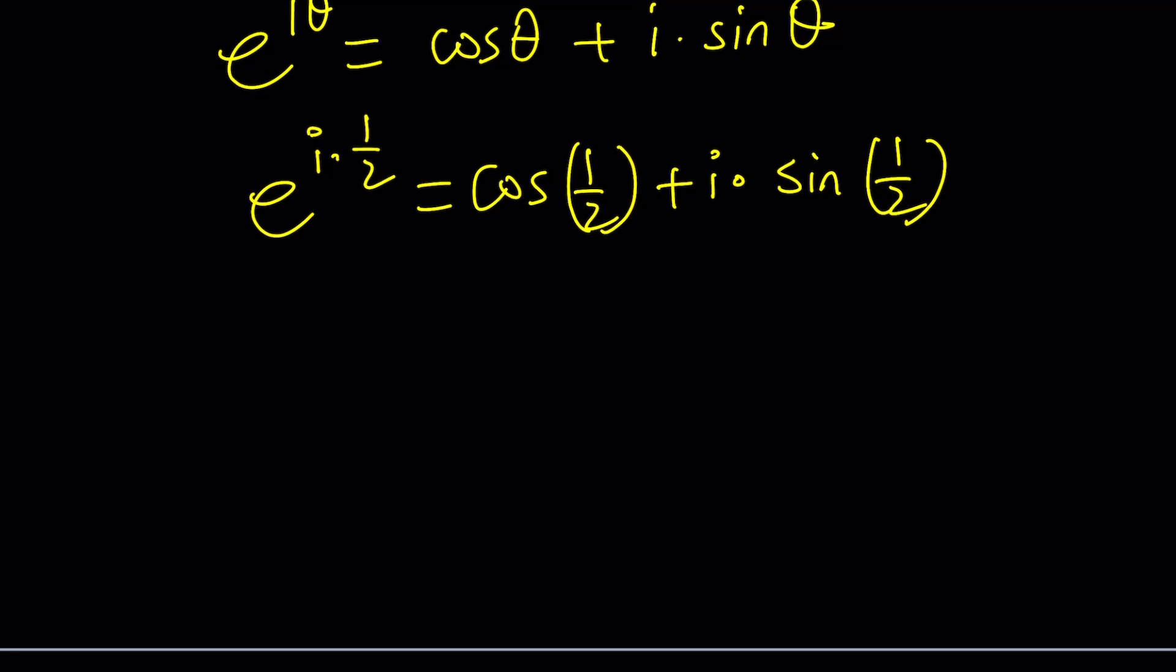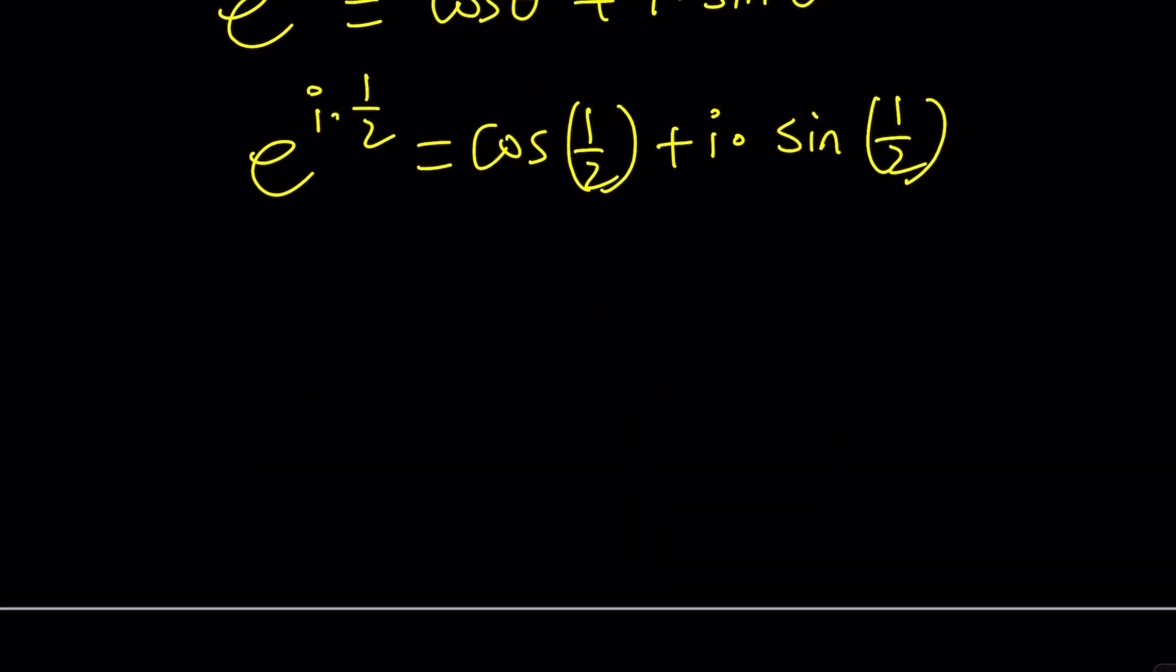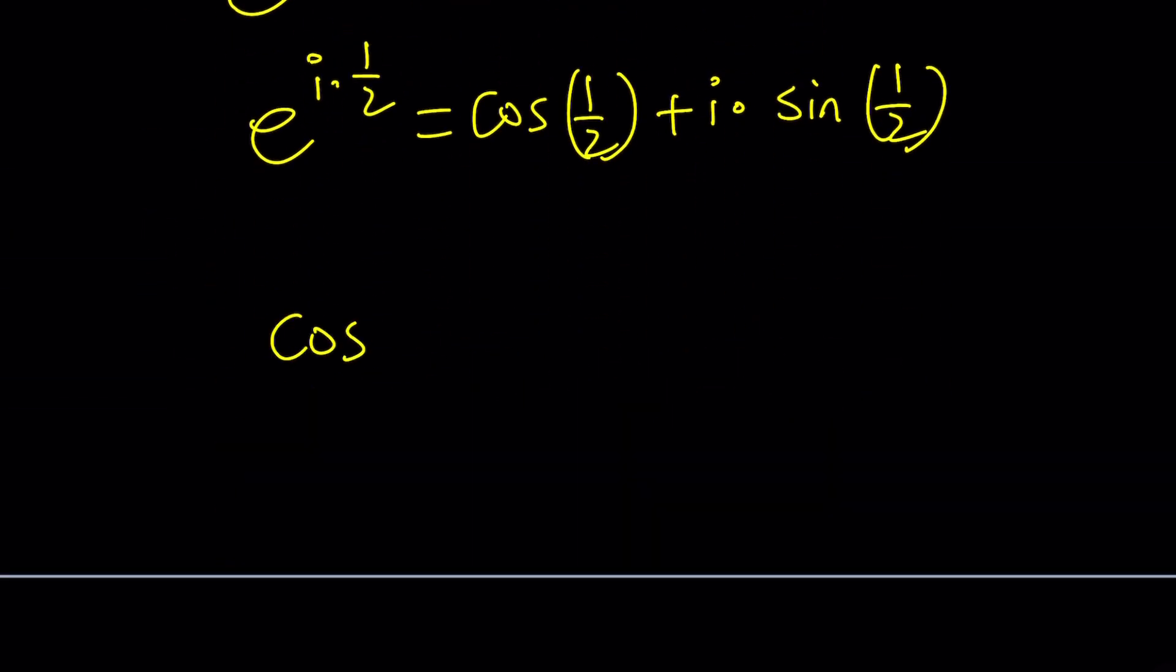You can evaluate it, you can put it into a calculator, but this is the exact form. Isn't that crazy? Yes. Now, we just found a particular solution, though, right? In general, you can definitely replace 1 half with 2n plus 1 half and write the solutions as follows. This would be the general solution because there are infinitely many branches, solutions, whatever cuts, whatever you want to call that.